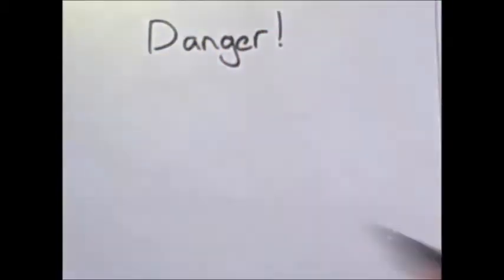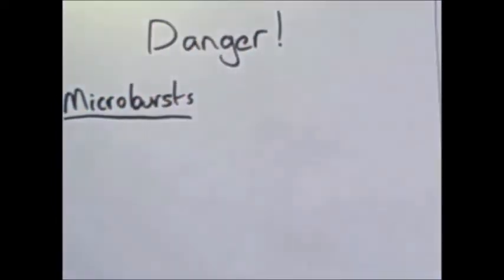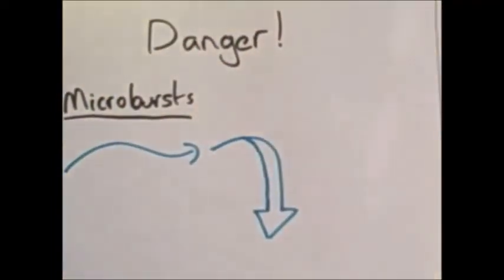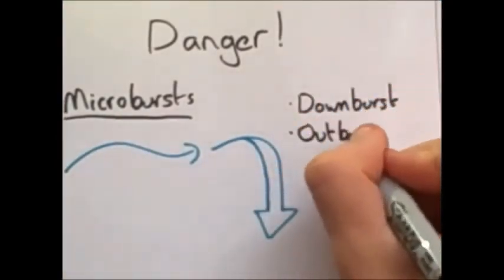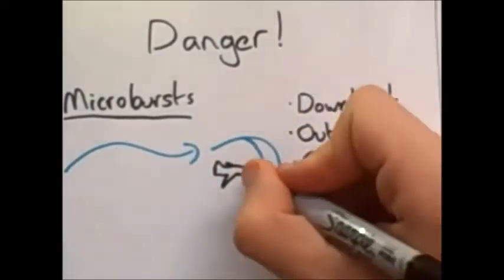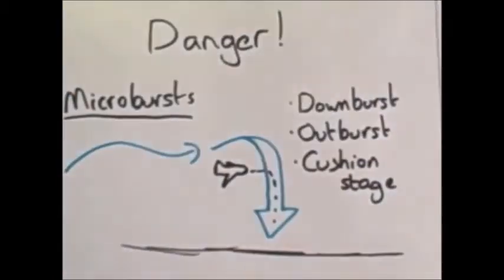One of the most dangerous weather phenomenons is a microburst. This is when air suddenly sinks to the ground. It goes through three stages: Downburst, outburst, and cushion stages. Its scale and suddenness is the cause of all its danger. It can whip airplanes out the sky and crash them into the ground.